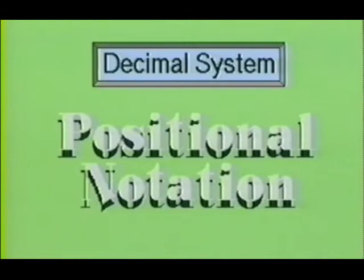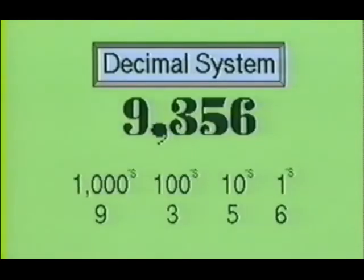The decimal numbering system also utilizes positional notation. This is the order of digits whereby the leftmost digit carries the largest value and the rightmost digit carries the smallest value. For example, the number 9,356 can be stated as having 9 one-thousands, 3 hundreds, 5 tens, and 6 ones.